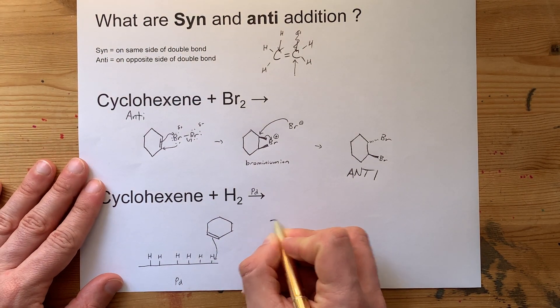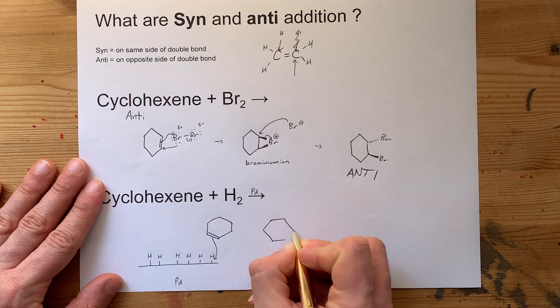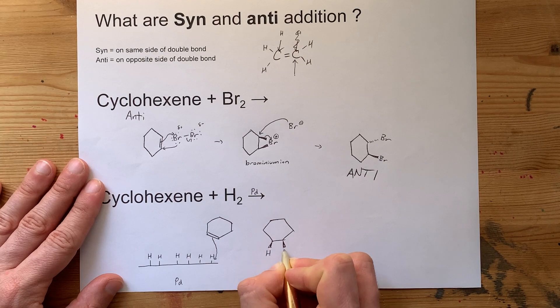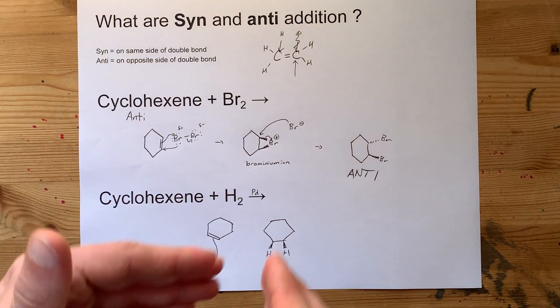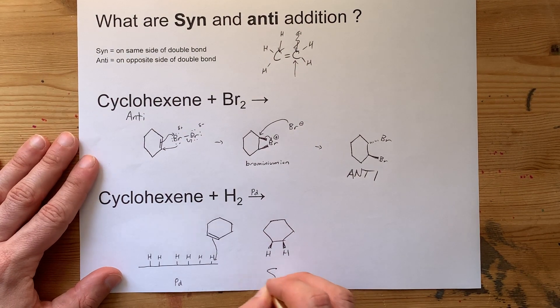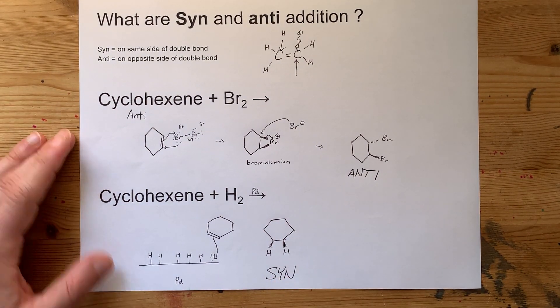So when you take a look at where those two things added, they are either both in front or both in back because they added to the same side of the double bond. It is a syn-addition.